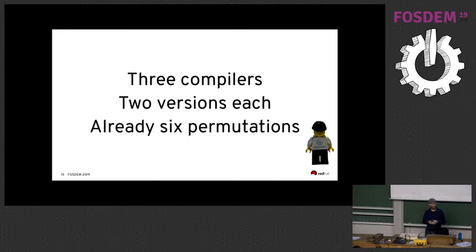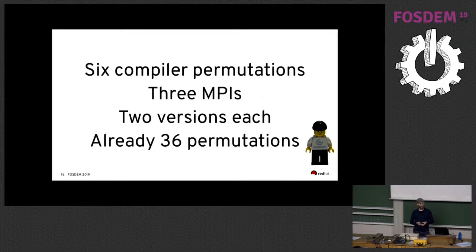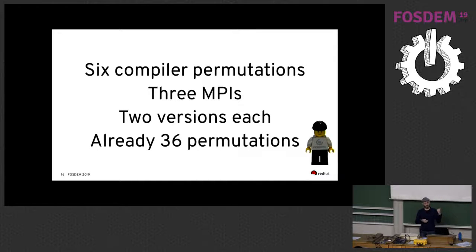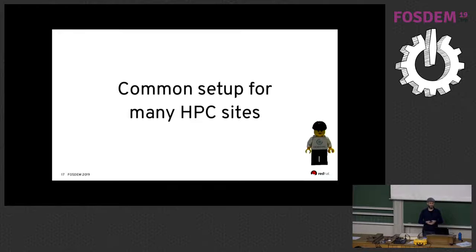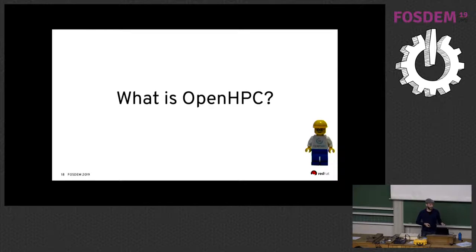A small example: if you have three compilers each in two versions, you already have six permutations. If you multiply this by three MPIs each in two versions, you're already trying to provide 36 permutations of MPIs with different compilers. This is the point where most HPC sites use some kind of automation, because you cannot handle this without it. This is a common setup for many HPC sites, and it's one of the reasons the OpenHPC project was created.